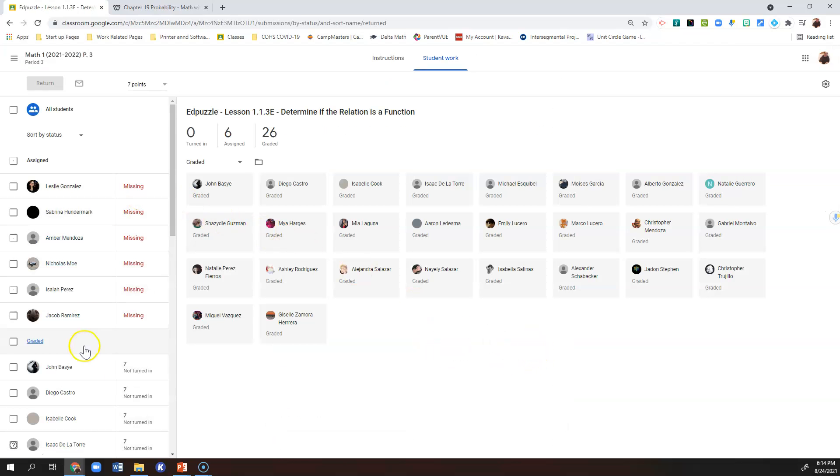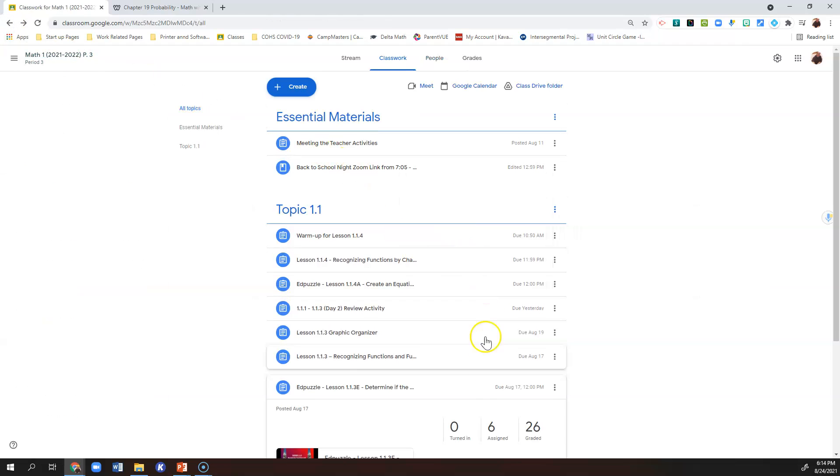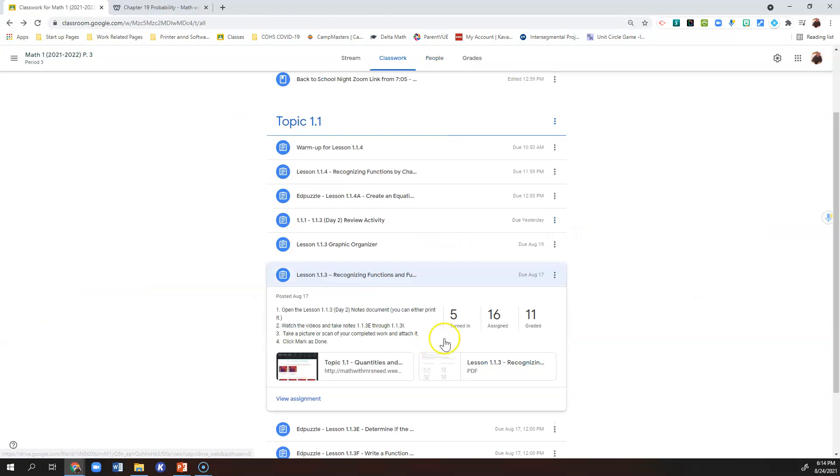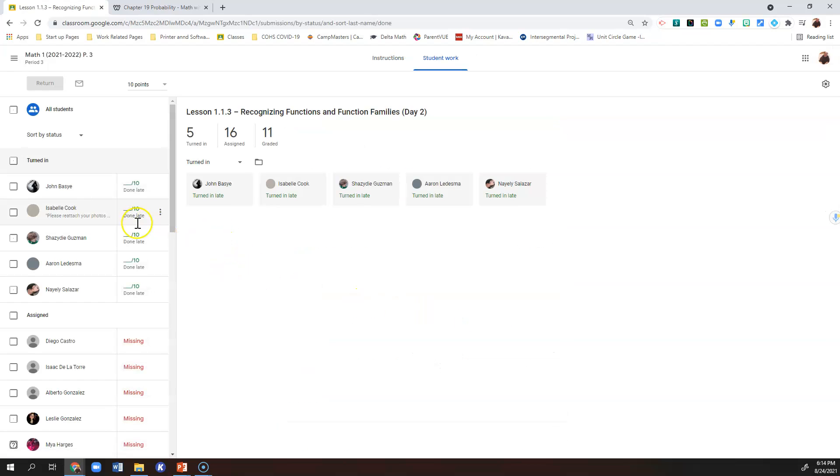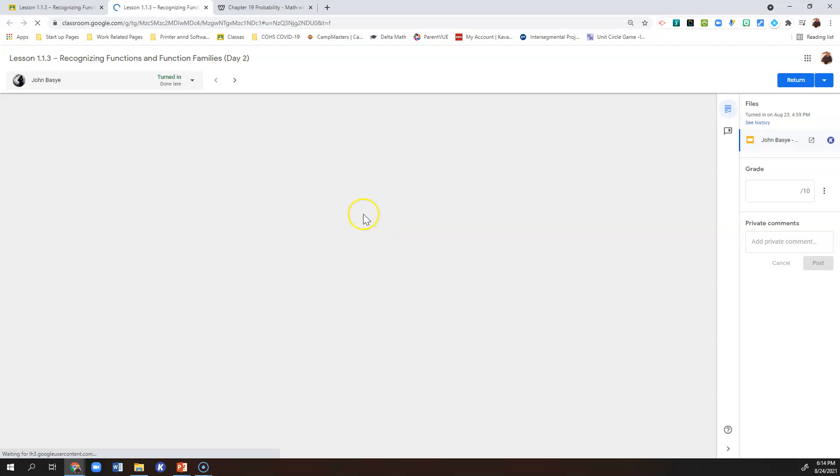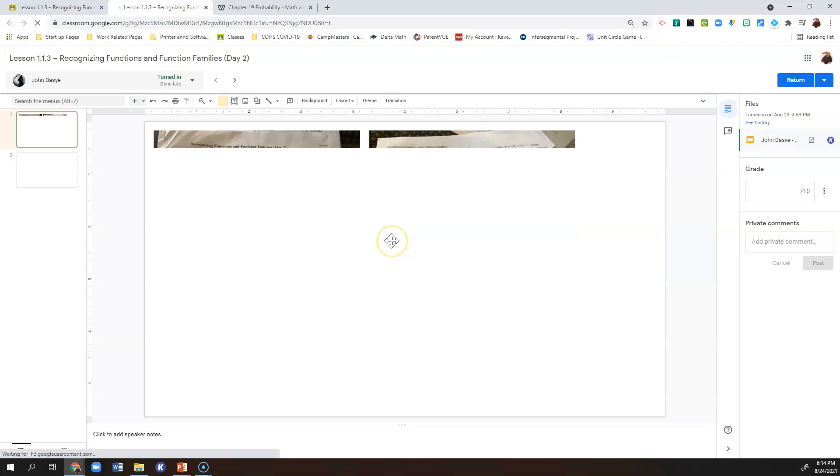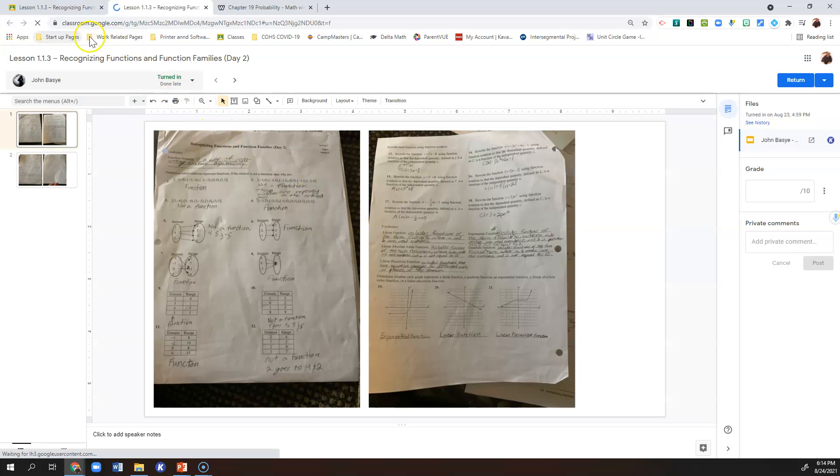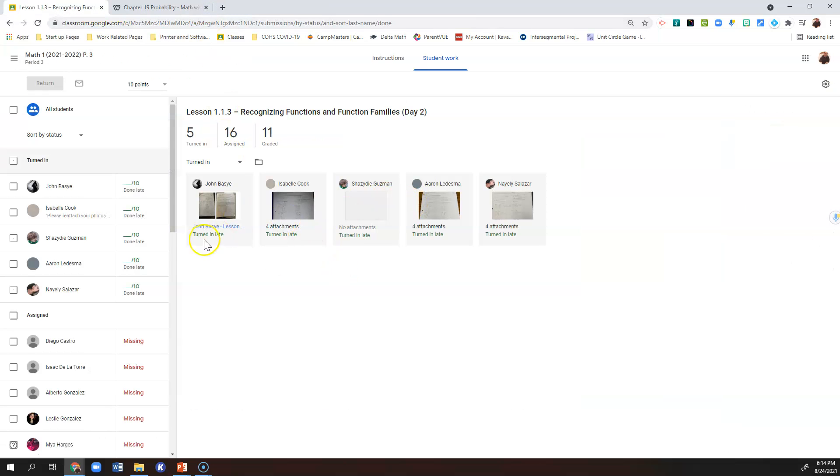It's either been graded and they have a score, like Edpuzzle videos they should have a score next to their name, or it is an assignment where if it's not graded they either have it posted in Google Classroom because they were absent, or they have it in hand.